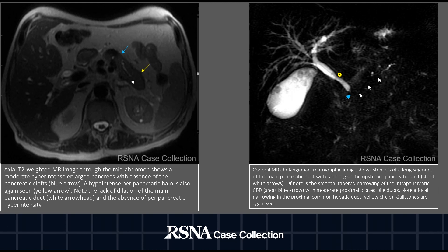In the coronal MRCP image, we can better see stenosis of a long segment of the main pancreatic duct with tapering of the upstream pancreatic duct, pointed by the short white arrows. Also note the smooth tapered narrowing of the intrapancreatic common bile duct, shown by the short blue arrow, with moderate proximal dilated bile ducts. We can see a focal narrowing in the proximal common hepatic duct, marked by a yellow circle.